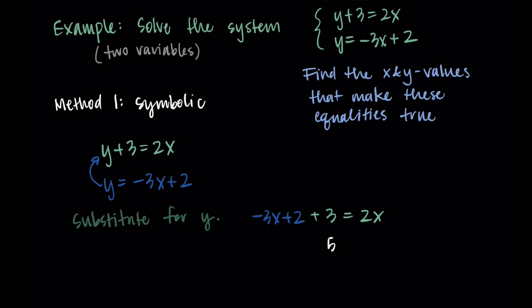Now I have an equation with just one unknown. X is my only unknown, and I'm going to solve for it. If I combine two plus three, I get five, and I'll move the three X over to the other side so that I have five X on the right hand side. This leaves me with five equals five X, dividing by five gives me X equals one.